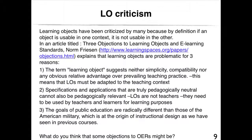Learning objects have been criticized by many because, by definition, if an object is usable in one context, it is not usable in another. In an article titled 'Three Objections to Learning Objects and E-Learning Standards,' Norm Friesen explains that learning objects are problematic for three reasons. First, the term learning objects suggests neither simplicity, compatibility, nor any obvious relative advantage over prevailing teaching practice. Second, specifications that are truly pedagogically neutral cannot also be pedagogically relevant — learning objects need to be used by teachers and learners for learning purposes. Third, the goals of public education are radically different than those of the American military, which is at the origin of instructional design.